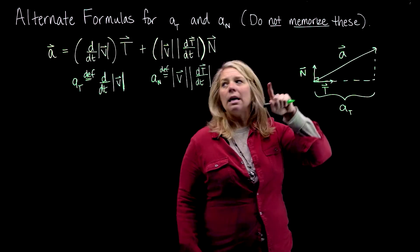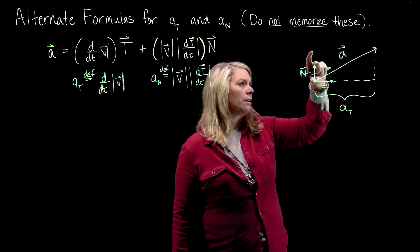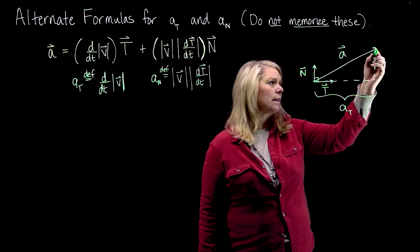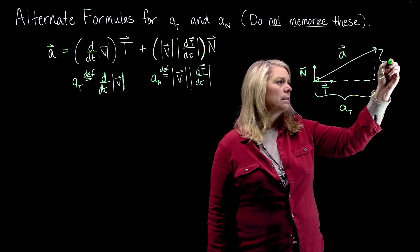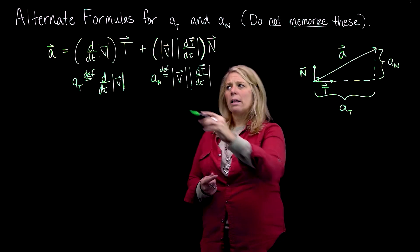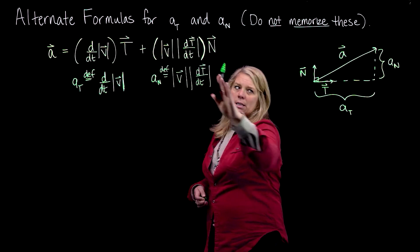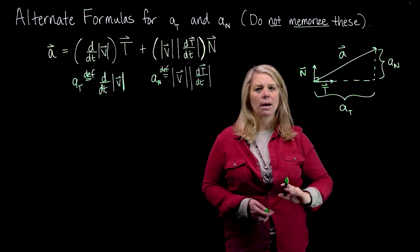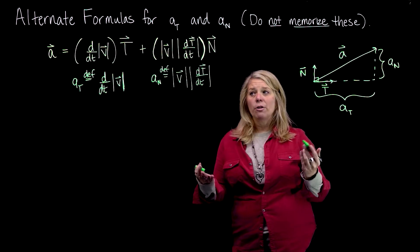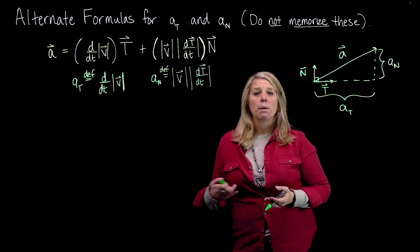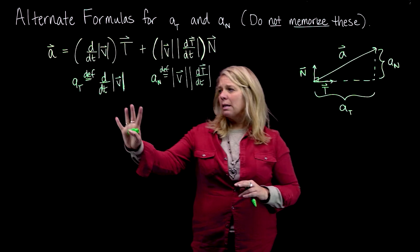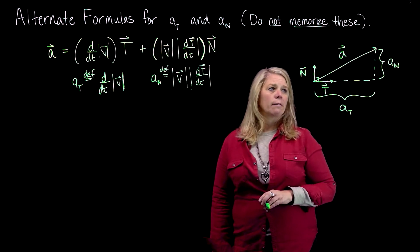A sub N is the scalar that I would need to multiply by N so that when I add those two vectors I get the acceleration vector. This distance here is the A sub N. Understanding what this equation is telling you geometrically can help you think about some of these formulas, so that even if you do have to memorize them, they're not hard to memorize.